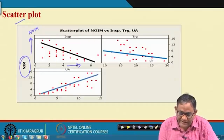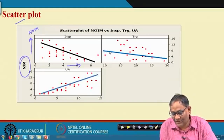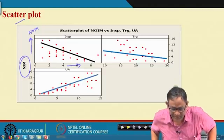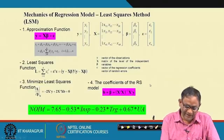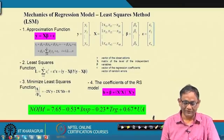For training, there is also a declining trend, and for unsafe acts it is an increasing trend. For training versus NYM, the data are scattered and the fitted line may not explain much variability. Nevertheless, the scatter plots indicate some linear relationships that can be captured through linear regression. So the first step is a scatter plot between the dependent and all independent variables.